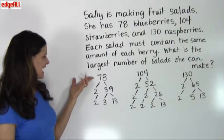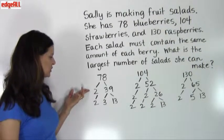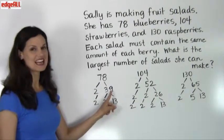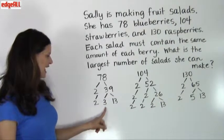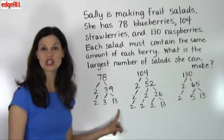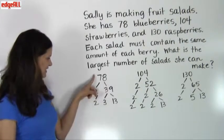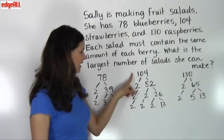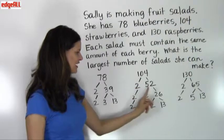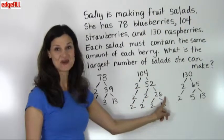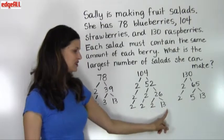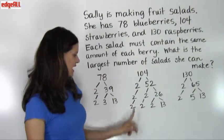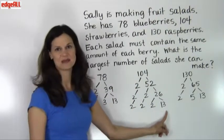For 78, dividing by 2 gives 39, and 39 divided by 3 equals 13. So the prime factorization of 78 is 2 times 3 times 13. For 104, dividing by 2 gives 52, then 52 divided by 2 gives 26, and 26 divided by 2 gives 13. So the prime factorization of 104 is 2 times 2 times 2 times 13.